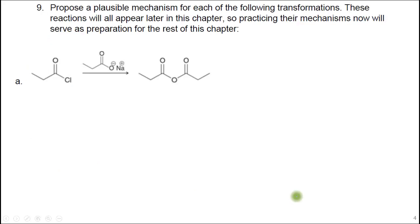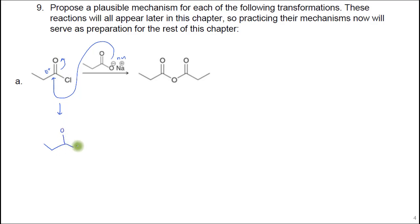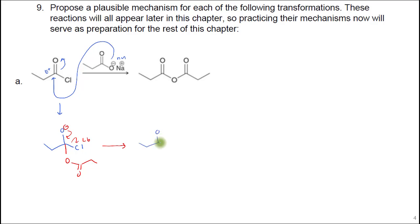Here we're looking at a mechanism for how an acid anhydride can be made. All of the mechanisms in this chapter are very similar — it starts with a nucleophile attacking the carbonyl electrophile. Those electrons go up to form the tetrahedral intermediate. Everything on that oxygen comes along. Then the electrons on the oxygen come down to kick off the leaving group — in this case, chlorine — and we reform the double bond to get the acid anhydride.